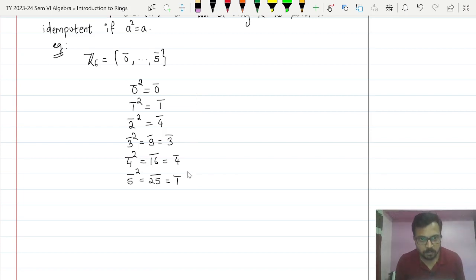So what is 0 bar square? Itself, right? So it is idempotent. 0 bar is idempotent. 1 bar square? 1 bar. 1 bar is idempotent.